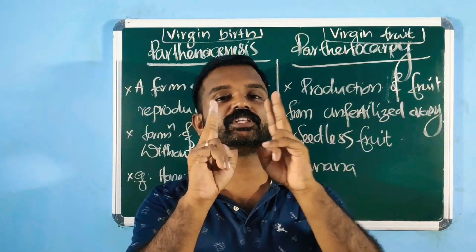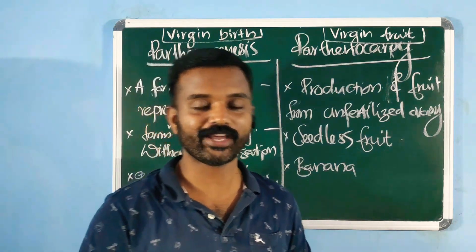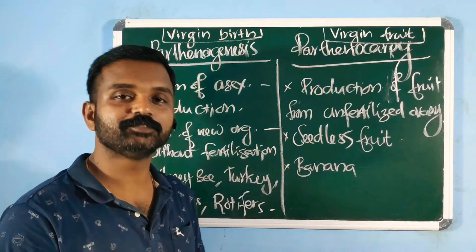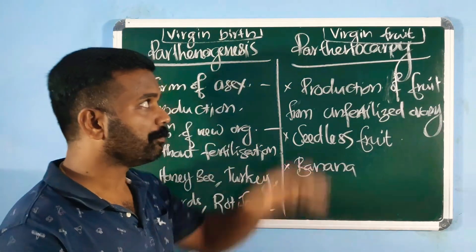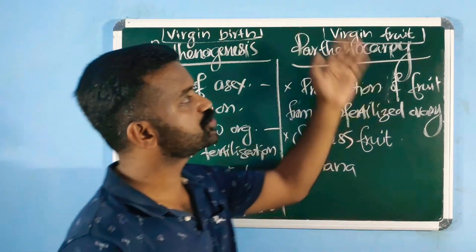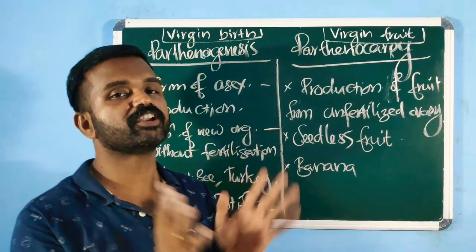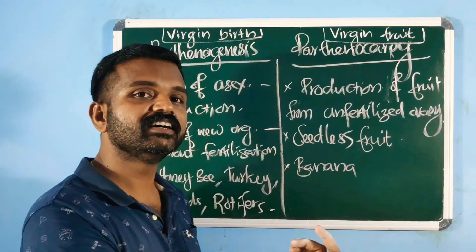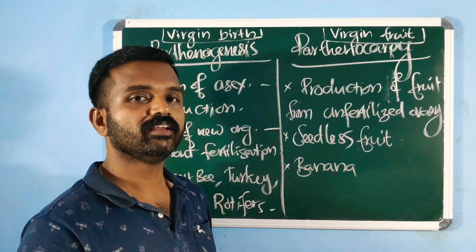What is the difference between these two terminologies? Parthenogenesis — the Latin word meaning is 'virgin birth.' Parthenocarpy — the Latin word meaning is 'virgin fruit.' So the name itself tells the difference between the two terminologies: one is virgin birth, the other one is virgin fruit.